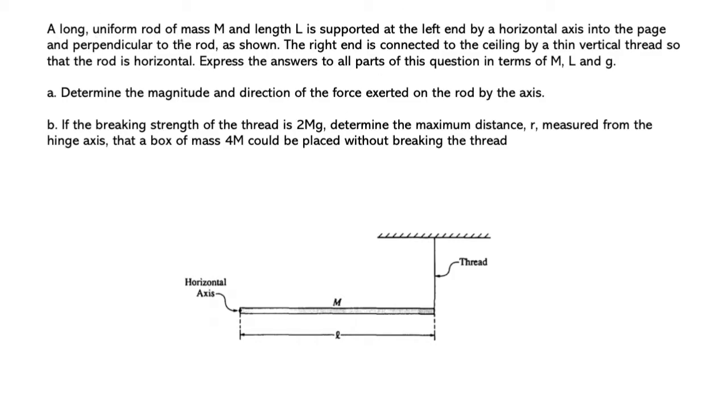A long uniform rod of mass M and length L is supported at the left end by a horizontal axis into the page and perpendicular to the rod as shown. The right end is connected to the ceiling by a thin vertical thread so that the rod is horizontal. Express the answers to all parts of this question in terms of M, L, and g, the only allowed variables.